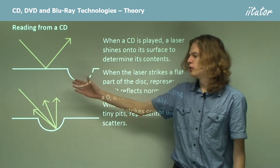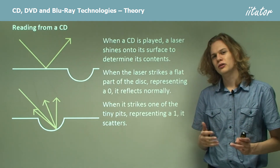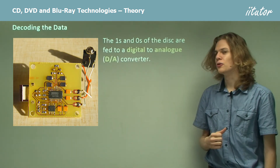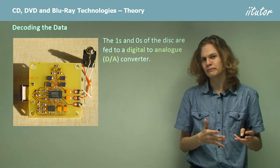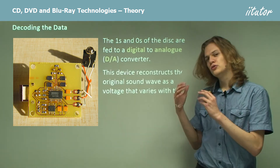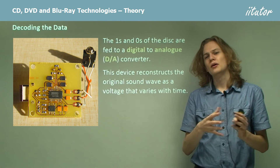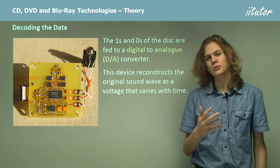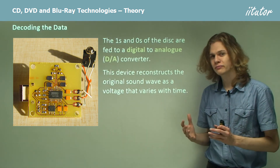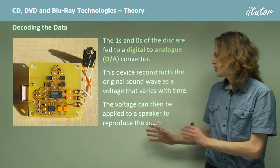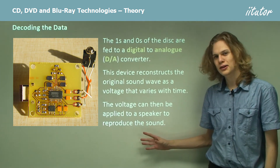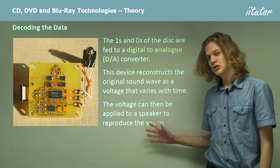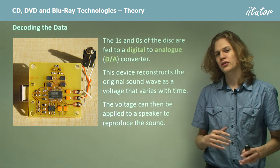By having a series of not-pits and pits we can encode a series of zeros and ones. Once we have all the ones and zeros, we can feed those to a digital-to-analog converter, which changes them back into an analog signal. This reconstructs the original wave by putting all the samples together. Once we have that reconstructed wave, we can amplify the voltage to a speaker and produce the sound. With a high number of samples — like 44,100 samples per second — the reproduction of the sound is very similar to the original.